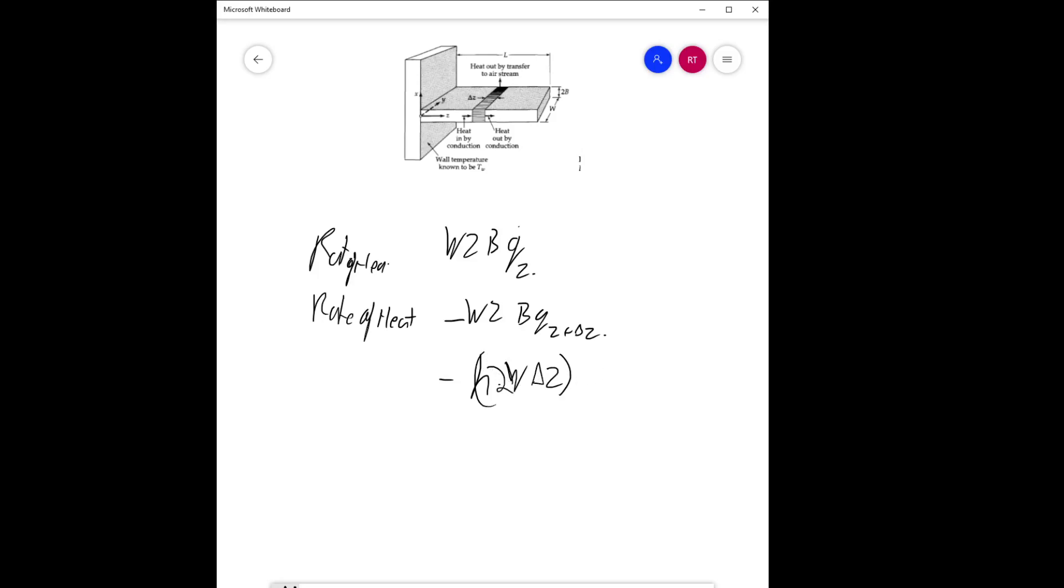This will be multiplied by T minus T ambient, and this will equal zero. Now equating this, you can have 2PW Q_z minus 2PW Q_(z + delta z), and moving this to the right hand side gives 2W delta Z times (T minus T ambient).